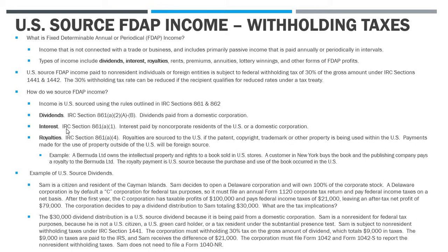Interest is the next big one. Under §861(a)(1), interest paid by non-corporate US residents or a domestic corporation or entity is US source interest income. So if a domestic corporation borrows money from someone outside the US and pays interest to that person, that's US source interest because it's being paid by a domestic corporation. If you have a US bank account and interest is being credited to it, that's also US source interest. The 30% withholding rate generally applies, though interest very commonly qualifies for what's called the portfolio interest exemption, where US source interest paid to non-residents is not subject to withholding — but that's a separate video topic.